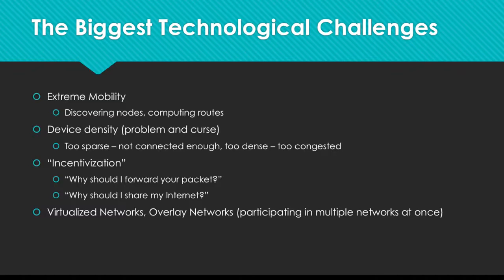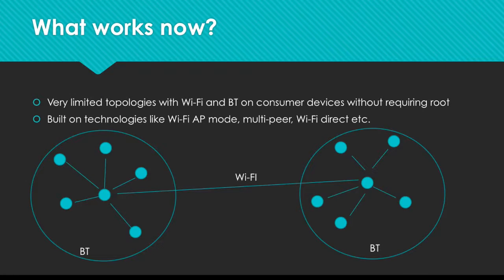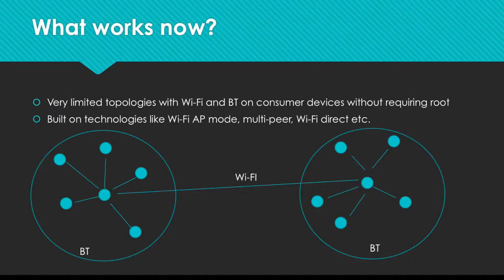What's working now: there are some very limited topologies people are building around meshes. You can have backhaul links that are maybe one or two hops with Wi-Fi, and then a spoke-and-hub topology with Bluetooth, or an inverse of that. It's built on technologies like Wi-Fi access point mode, multi-peer Wi-Fi Direct, and Wi-Fi peer-to-peer, but it's really limited to small meshes right now. Nobody's really come up with a way to expand this out into larger meshes.